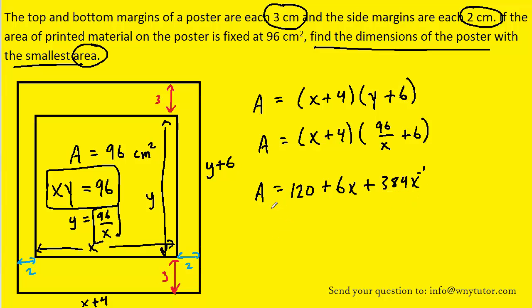We are now set to optimize this equation by taking the derivative of this equation. The constant term has a derivative of 0. 6x becomes 6. And then we use the power rule for the derivative of this term. So we have minus 384x to the minus 2.